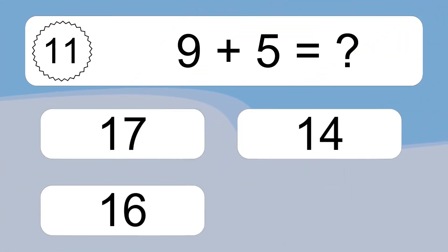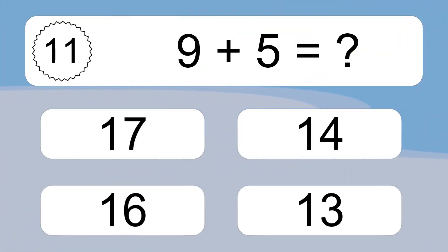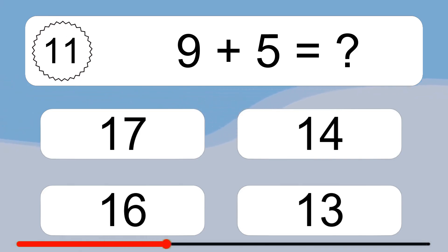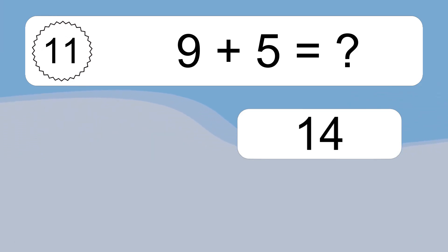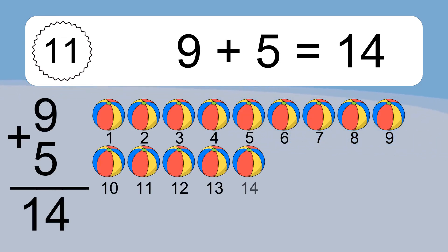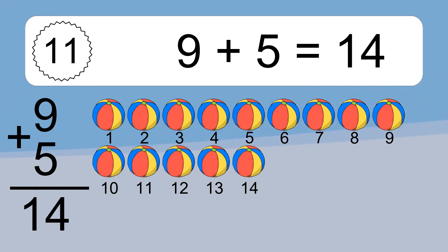9 plus 5 equals what? 9 plus 5 equals 14. Let's count it: 1, 2, 3, 4, 5, 6, 7, 8, 9, 10, 11, 12, 13, 14.